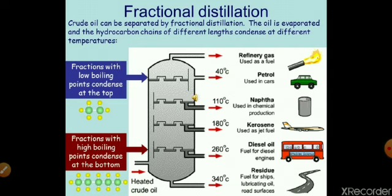From the figure, we can see that at 340 degrees Celsius, heavy oil is obtained. At 260 degrees Celsius, diesel oil is obtained. At 180 degrees Celsius, kerosene. At 110 degrees Celsius, naphthalene. At 40 degrees Celsius, petrol. Above it, at 30 degrees Celsius, petroleum ether is obtained. Below 30 degrees Celsius, uncondensed gases are obtained. The uncondensed gases can be used as liquefied petroleum gas.